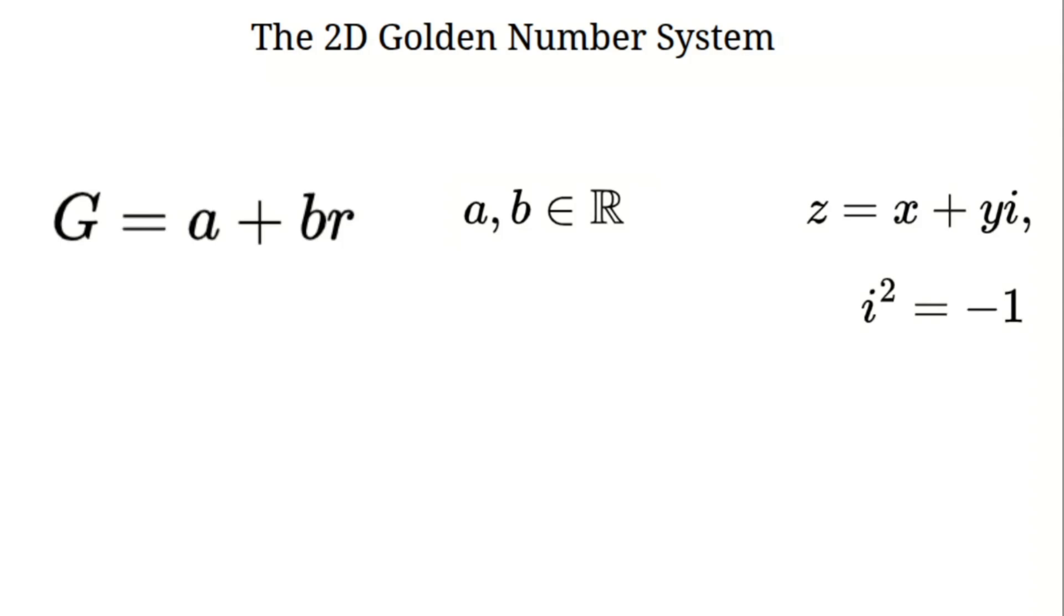For our system, R is defined by R squared equals R plus 1. Let me say that again. R times R equals R plus 1. This isn't about finding what R equals. It's a rule that shapes our algebra, like I shapes complex numbers.